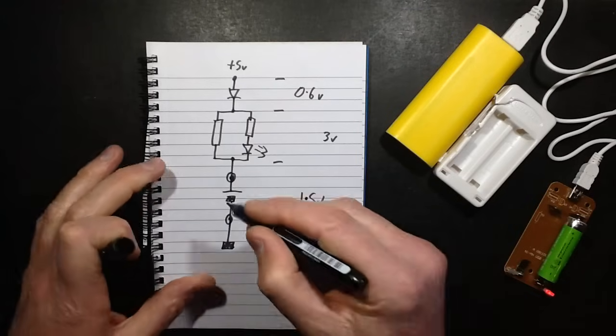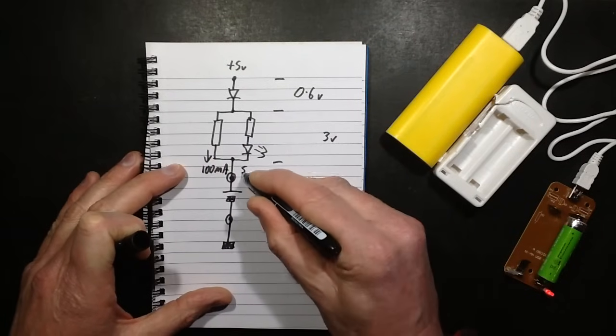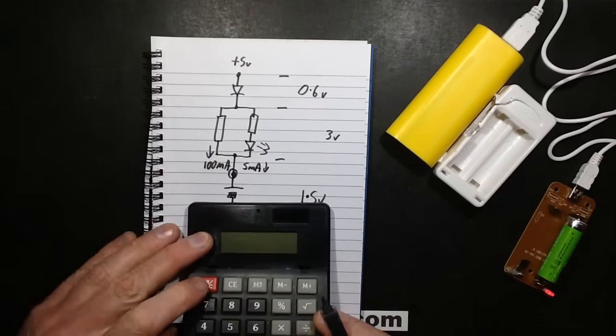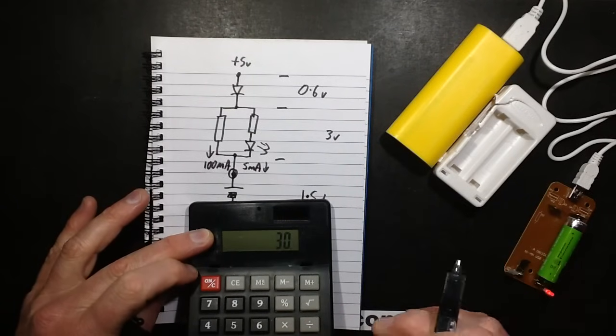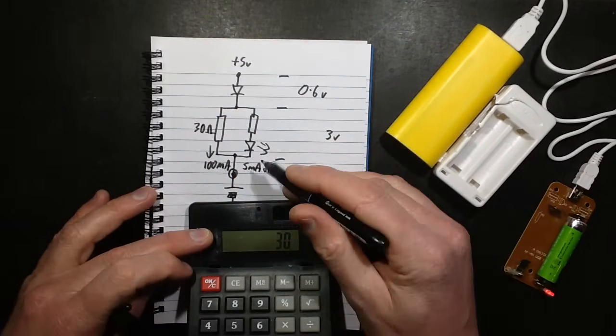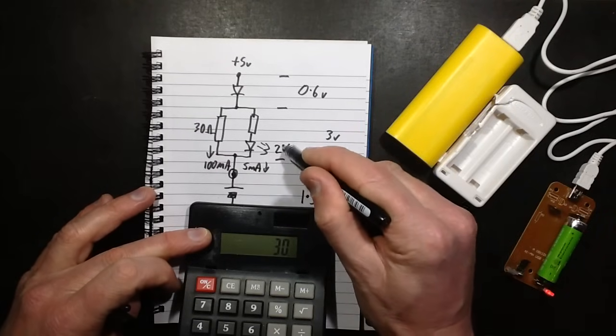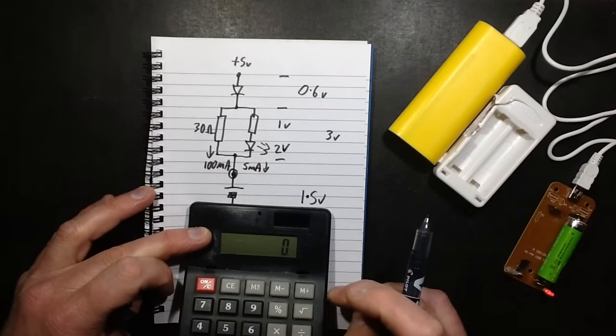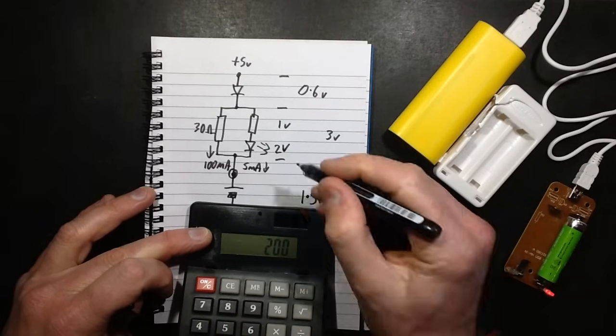So if we wanted 100mA to go through the main resistor, and maybe about 5mA through the LED, that would mean resistor values of - let's do the maths here. R equals V over I, 3 divided by 0.1 equals 30 ohms. For the LED with 2V across it, that only leaves 1V to drop across the resistor. R equals V over I, 1 divided by 0.005 equals 200 ohms.